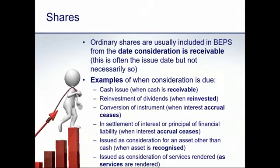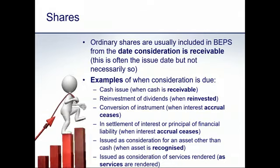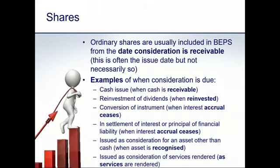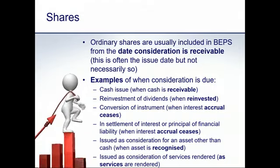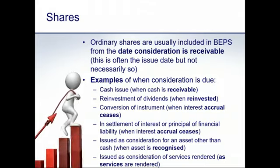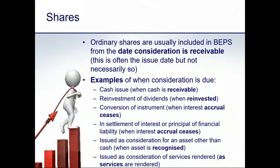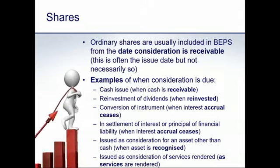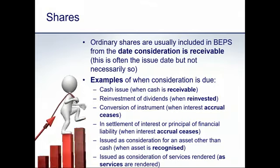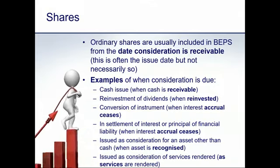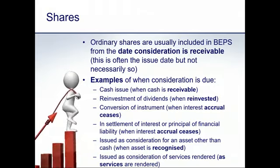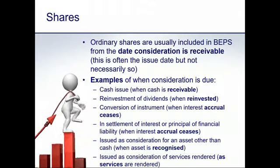If ordinary shares are issued by way of reinvestment of dividends, those new shares are included from the date they are reinvested. If an ordinary share results from conversion of another instrument, such as a convertible preference share, it is included from the date on which the interest accrual on the prior instrument ceases. So if a convertible pref accrues interest at 10%, the date that 10% interest stops accruing is the date the share is included as an ordinary share for basic EPS purposes.